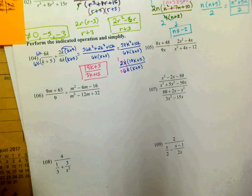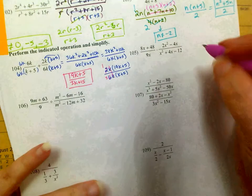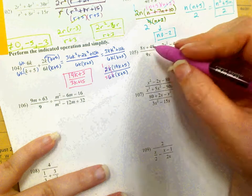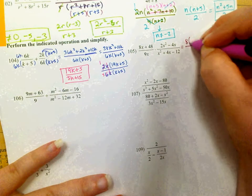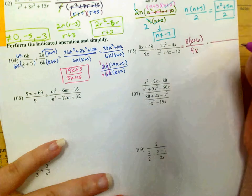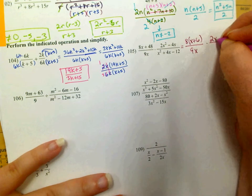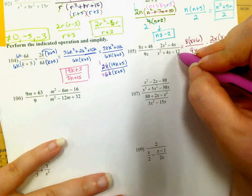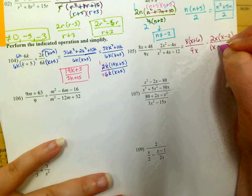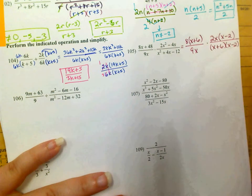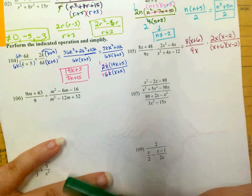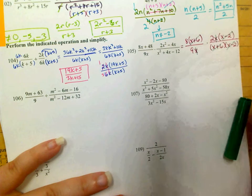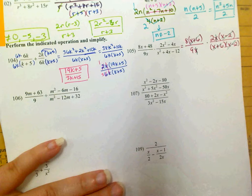Number 105: factor both expressions as much as possible. In 8x plus 48, factor out an 8 leaving x plus 6, with 9x in the denominator. In the other expression, factor out a 2 and an x, leaving x minus 2. The factors of negative 12 that add up to 4 are positive 6 and negative 2. The x plus 6 and x minus 2 cancel out, x divided by x cancels, and I'm left with 8 times 2 divided by 9, which is 16 ninths.